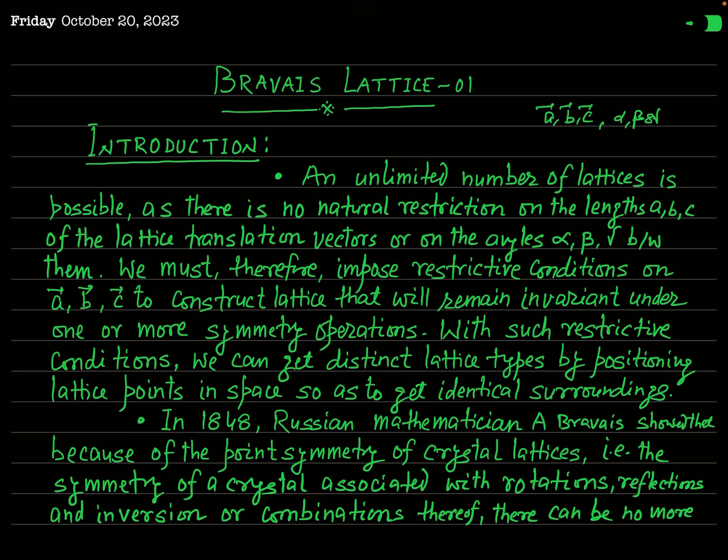We must therefore impose restrictive conditions on the translational vectors A, B, C. After this restriction we can construct lattices that will remain invariant under one or more symmetry operations. With such restrictions we can get distinct lattice types by positioning lattice points in space so as to get identical surroundings.